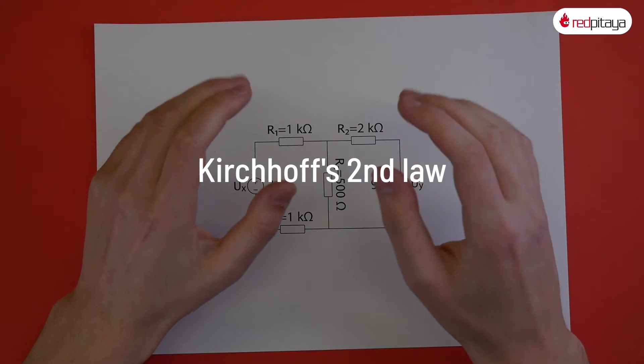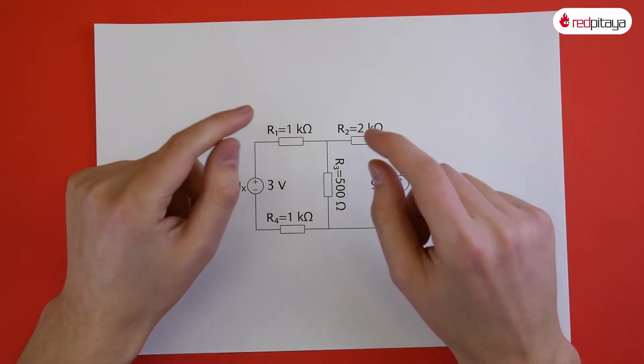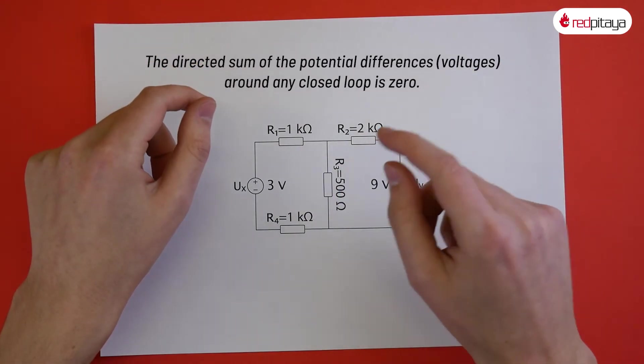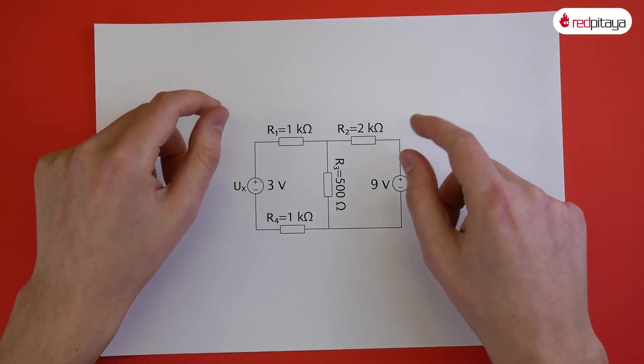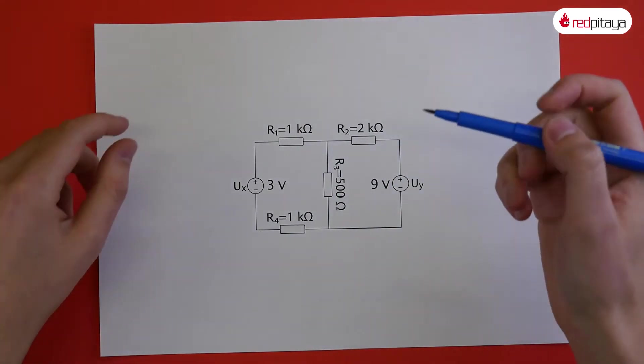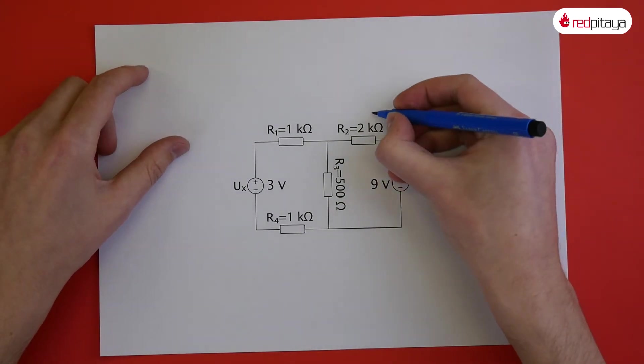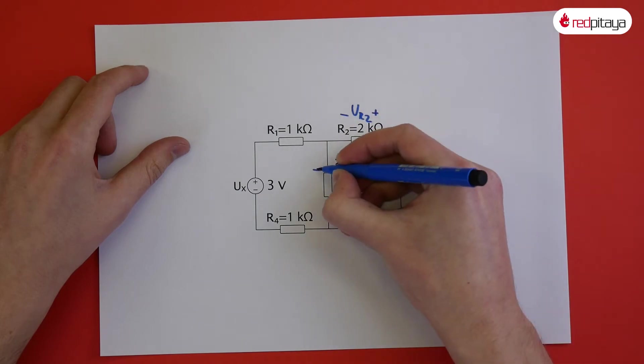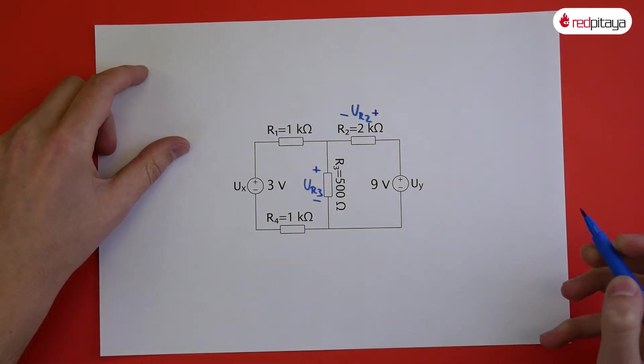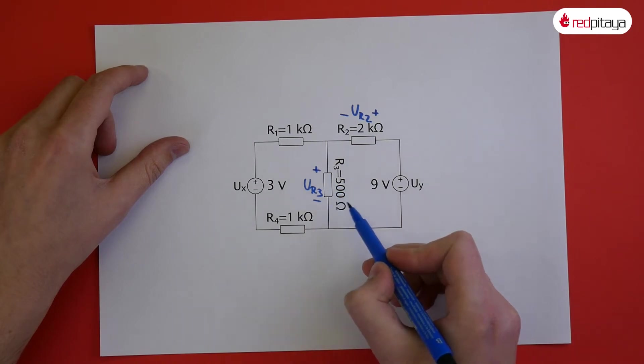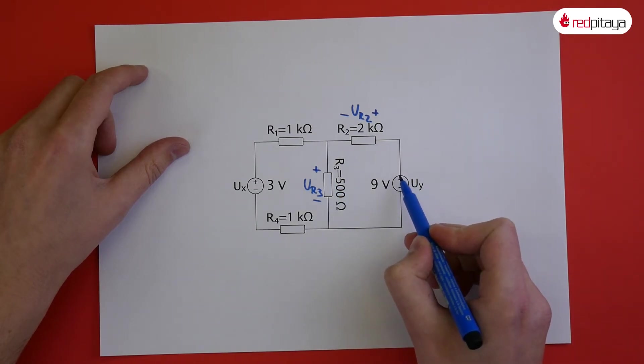Kirchhoff's second law talks about voltage. It states that the directed sum of the potential differences around any closed loop is zero. To illustrate that, it's best to draw voltage drops across resistors and follow a loop. This voltage plus this voltage minus this voltage equals zero. Minus because we enter from the minus side.